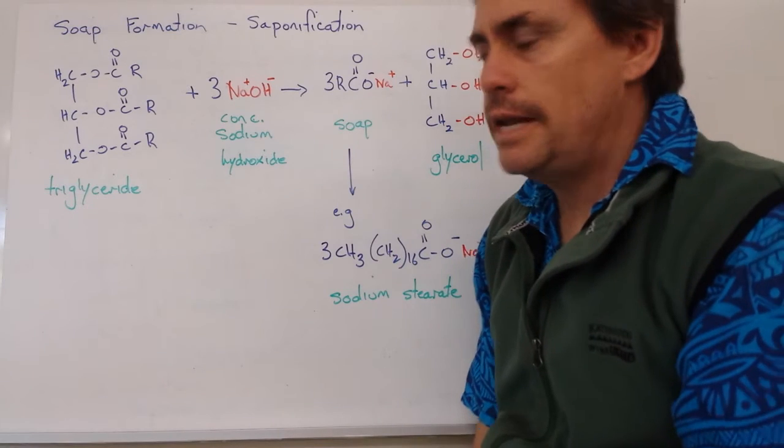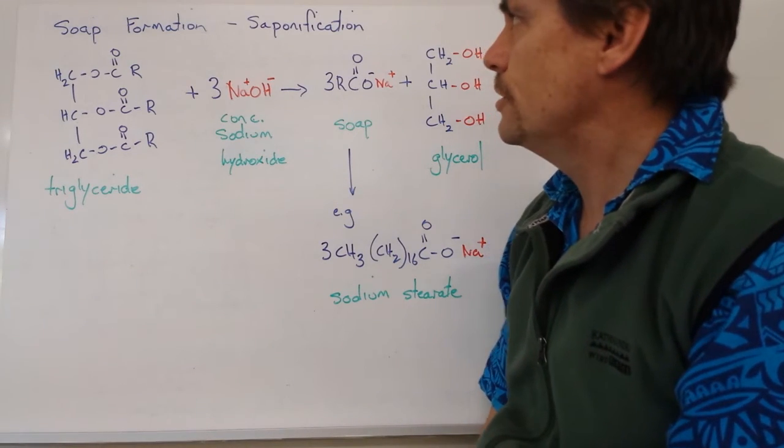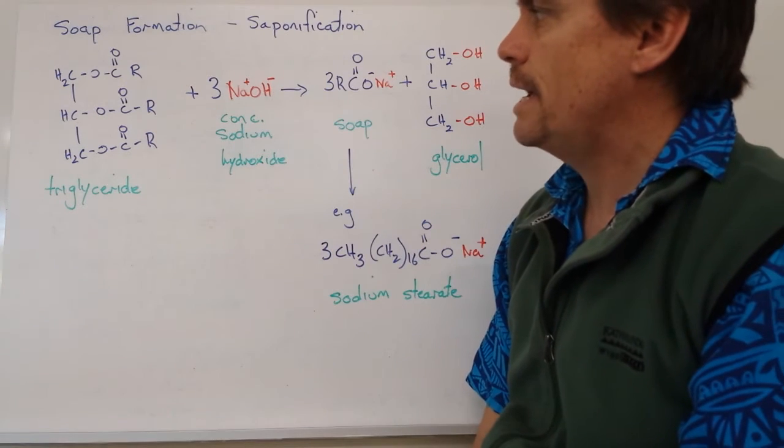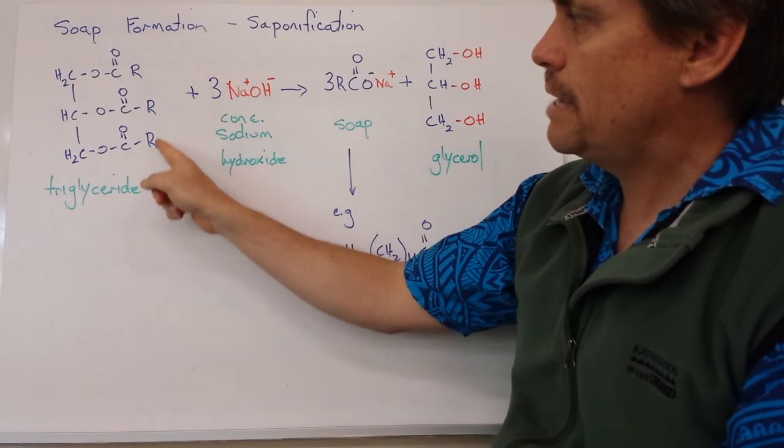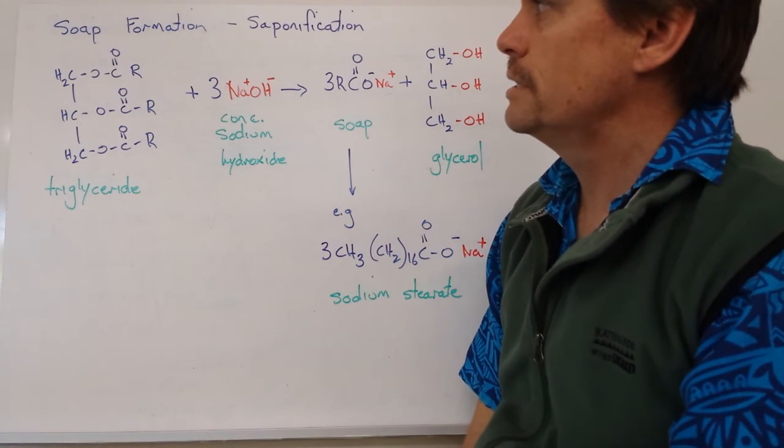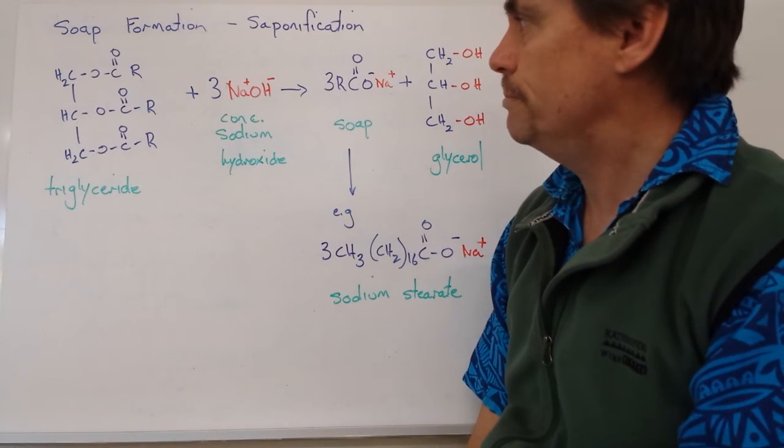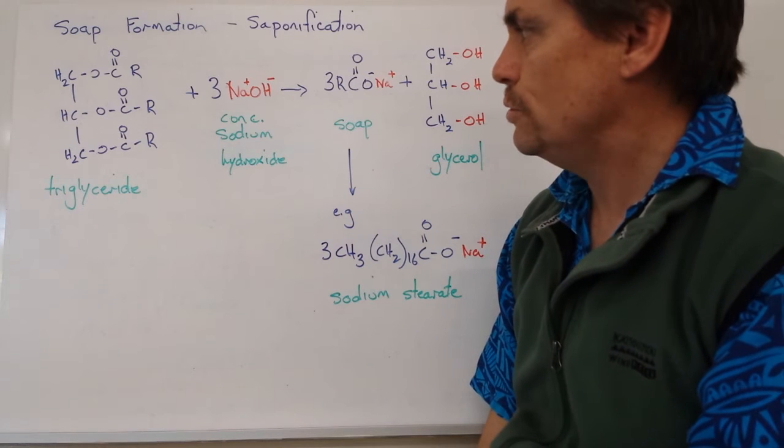So let's now apply that knowledge of hydrolysis to soap formation or the saponification reaction. So we've got our triglyceride, and you'll notice that I have the same R groups here. They can be different, but I'm just going to simplify it and have the same R group. To that, we add a strong base, or what we call a lye solution, and it must be a concentrated version of that lye solution.